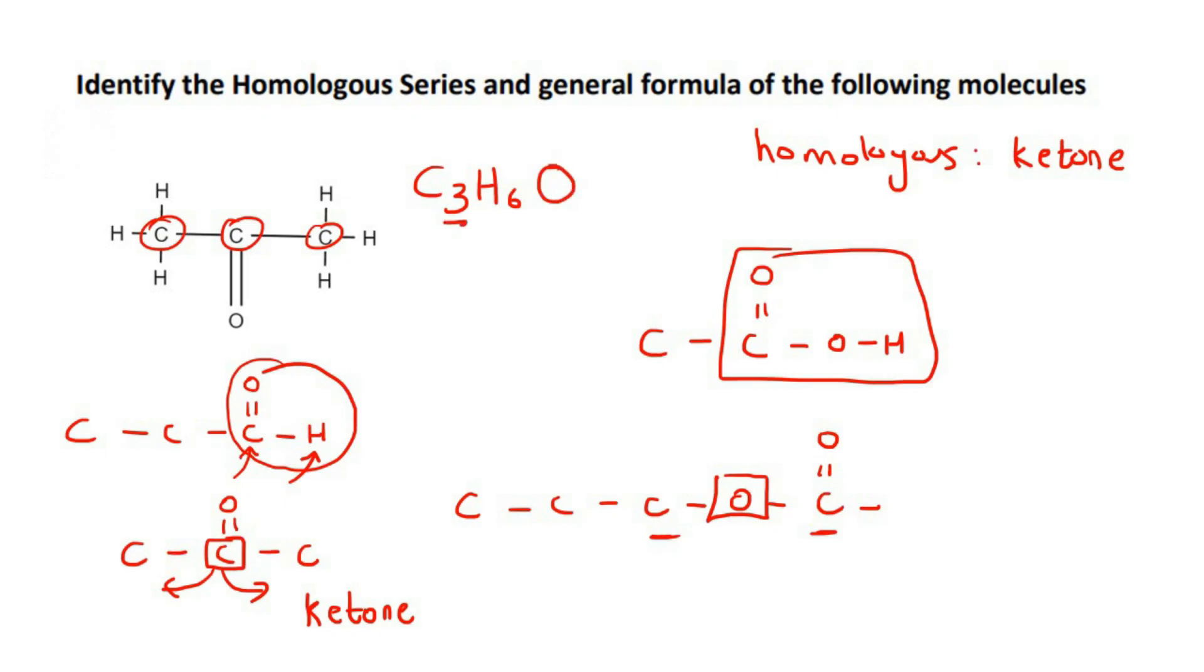So that's pretty easy. We can say that there would be N carbons. Then there should be double the amount of hydrogens. And then there's an oxygen on the end.